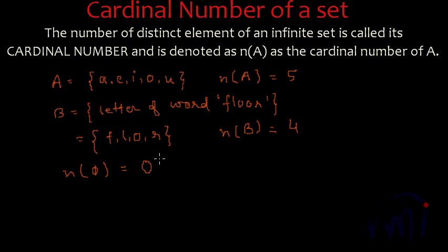And what will be the cardinality of a singleton set? So the cardinal number of a singleton set, if I define a set C is equal to 5, which has only one element, then the cardinal number of C will be 1. So the cardinal number of null set is 0 and the cardinal number of a singleton set is actually 1.